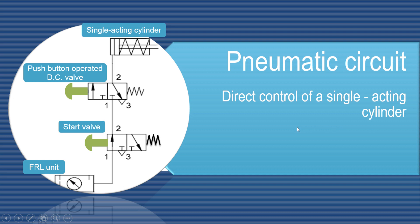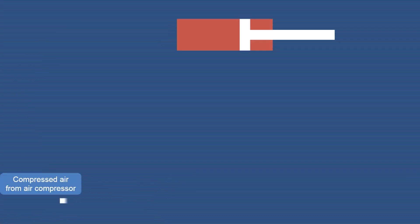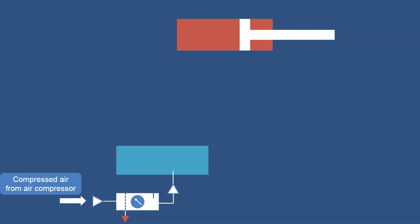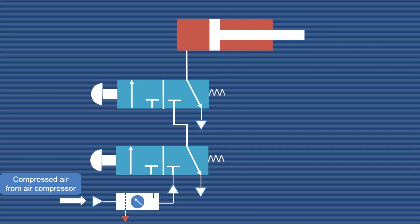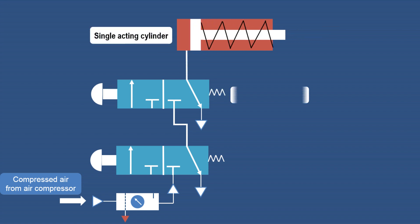This video explains direct control of a single acting cylinder. The components of the circuit are as shown. First, we have the FRL unit, then a push button operated start valve, then a normally closed direction control valve, and a single acting cylinder.